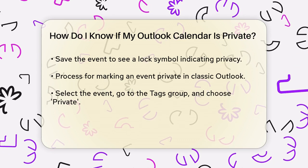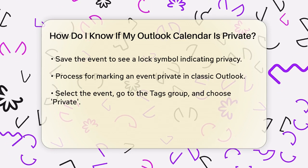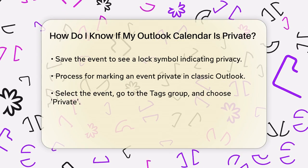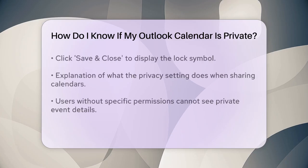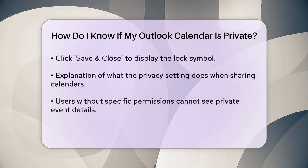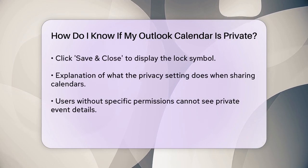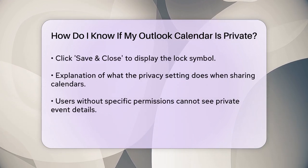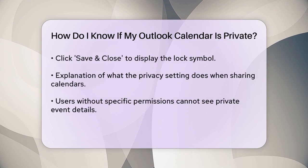If you're using the classic Outlook, the process is slightly different. You select the meeting or appointment you want to make private, go to the Tags group and select Private. Then click Save and Close, and you'll see the lock symbol on the event.